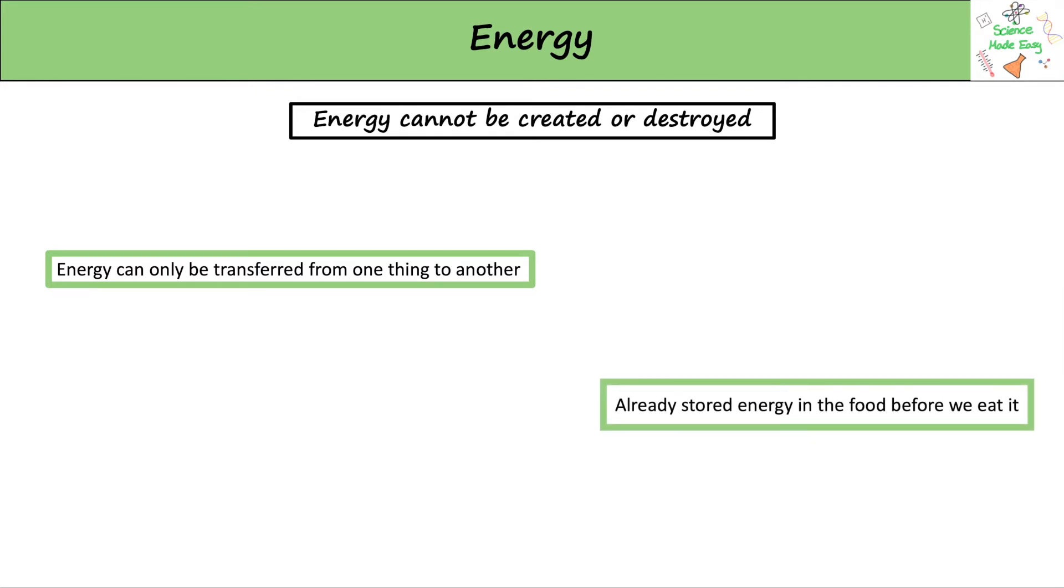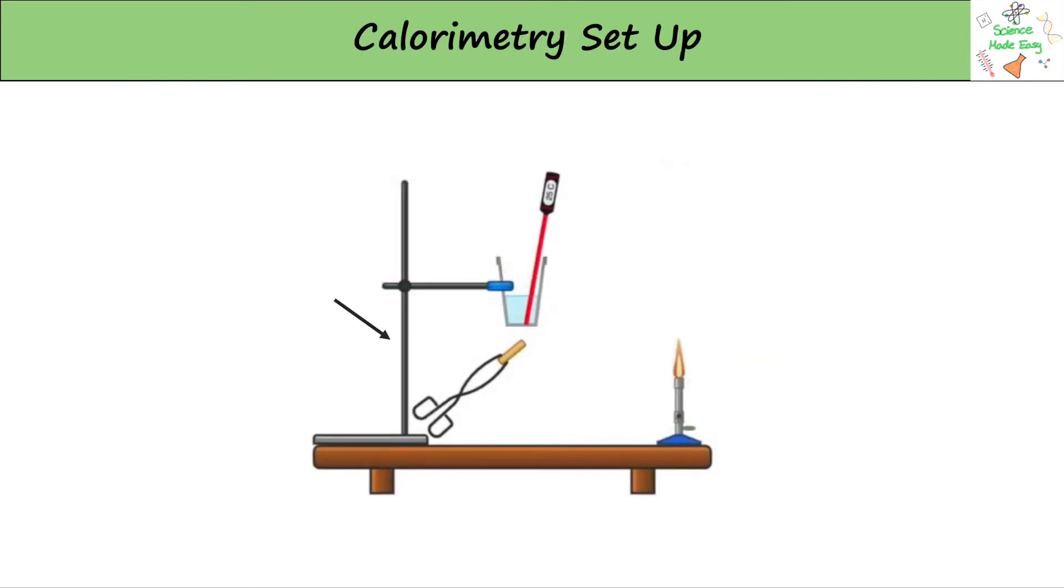So to carry out a calorimetry experiment you'll need a retort stand with a clamp, a thermometer, a calorimeter filled with water which is just a copper cup, tongs and a Bunsen burner.